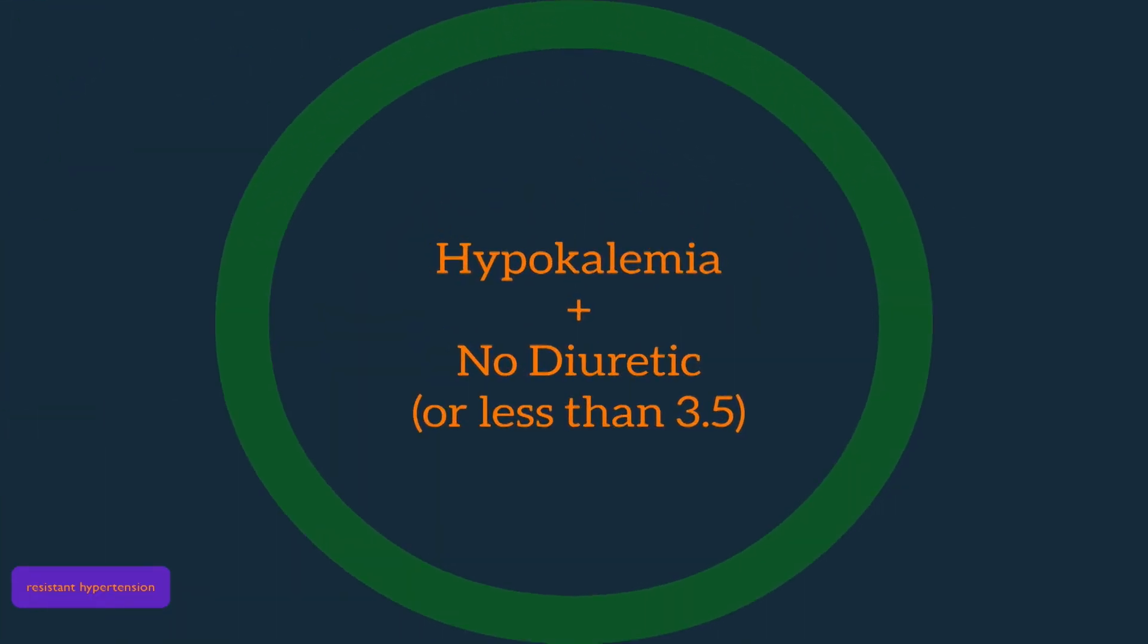If these causes are ruled out and the patient has hypokalemia, one can start to investigate causes of secondary hypertension. This is defined as hypertension with hypokalemia and no diuretic, or hypertension with hypokalemia and a diuretic, but a potassium level less than 3.5.